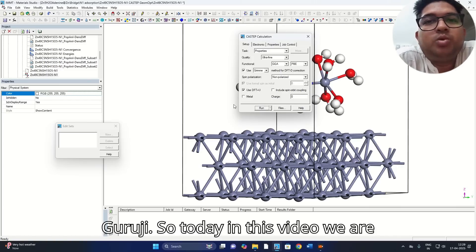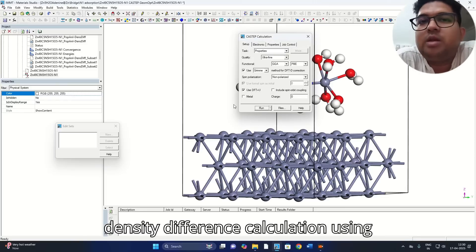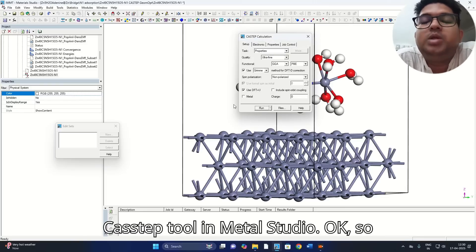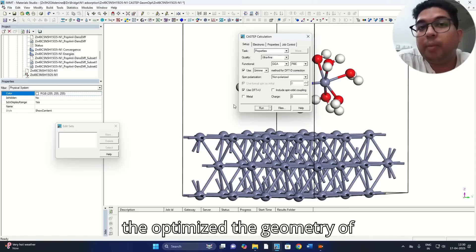Hello everyone, welcome to Quantum Guruji. So today in this video we are going to learn how to do the electron density difference calculation using CASTEP tool in Material Studio. Before doing this calculation, we need to optimize the geometry of your complex.